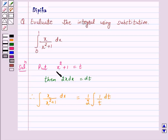Now, by this substitution, we have reduced the given integral to a known form. Now, this is equal to 1 by 2 log t.